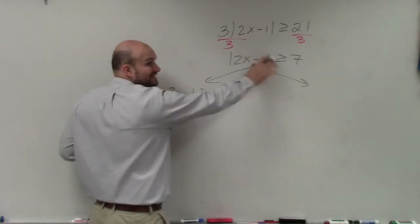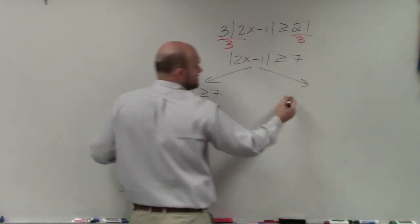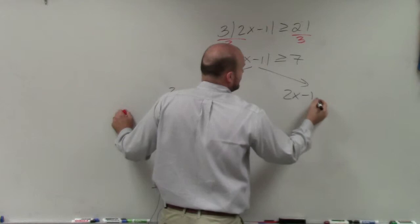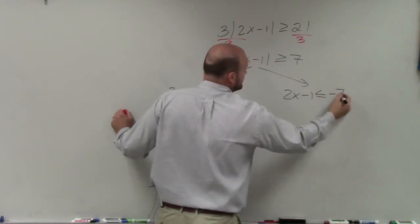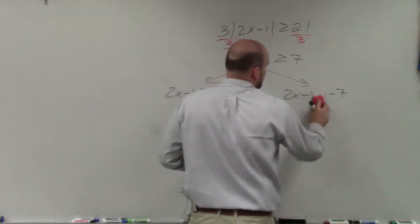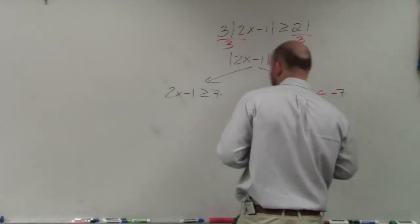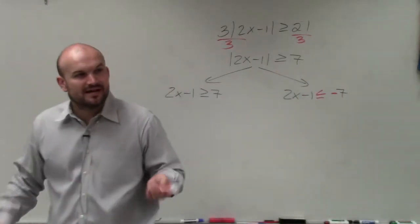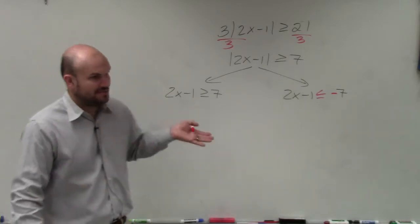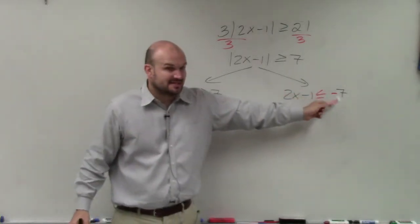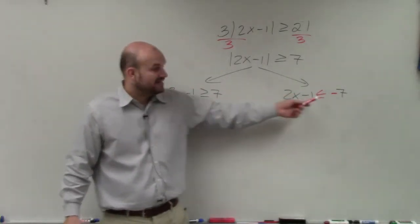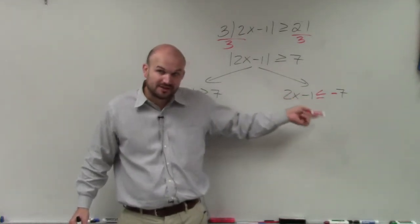But now, when you negate it, it's going to be flipped. 2x minus 1 is less than or equal to negative. Actually, you know what? Let's put these in red so you guys remember. That's the changes. Less than or equal to negative 7. I'm writing them in red for you guys to understand. Those are the changes I made. I negated this side compared to that side. And since I negated it, I had to flip the sign.